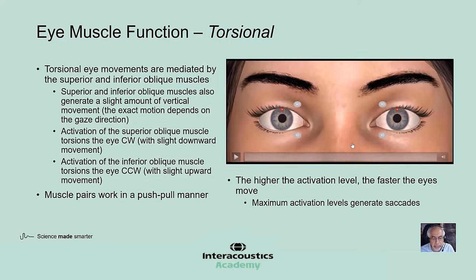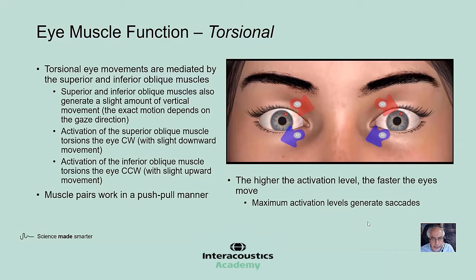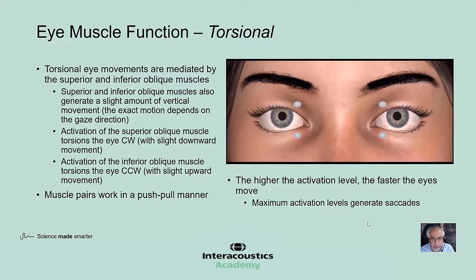Torsional eye movements are mediated by the superior and inferior oblique muscles, which also generate a slight amount of vertical movement. Contraction of the superior oblique torsions the eyes clockwise with a slight downward movement, whereas contraction of the inferior oblique torsions the eyes counterclockwise with a slight upward movement. Again, the paired muscles have the opposite action.